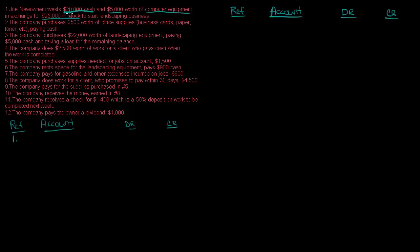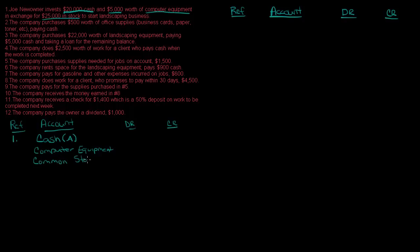Let's look at our accounts. He's investing cash — cash is one of my accounts, and cash is an asset. He's also giving $5,000 worth of computer equipment, so I've got computer equipment. And in exchange for $25,000 in stock, we're going to call this common stock. Common stock is an equity account, and computer equipment is also an asset.